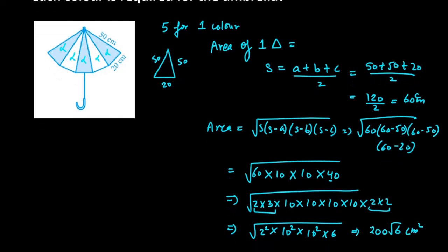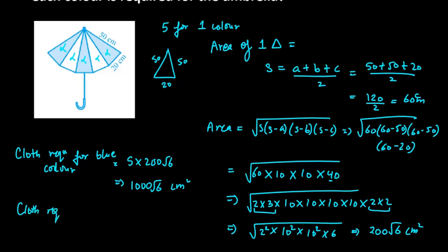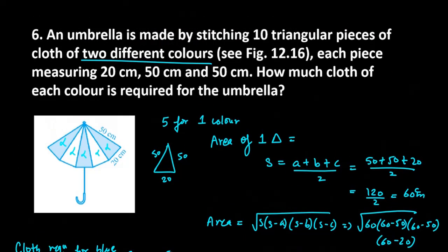Area of one triangle is 200 under root 6 centimeter square. So how much is the cloth required for blue color? It will be 5 into the value. 5 into 200 root 6. 5 into 200 is 1000 root 6 centimeter square. So yes, this is your answer for question number 6. Now we will be moving to the seventh one.